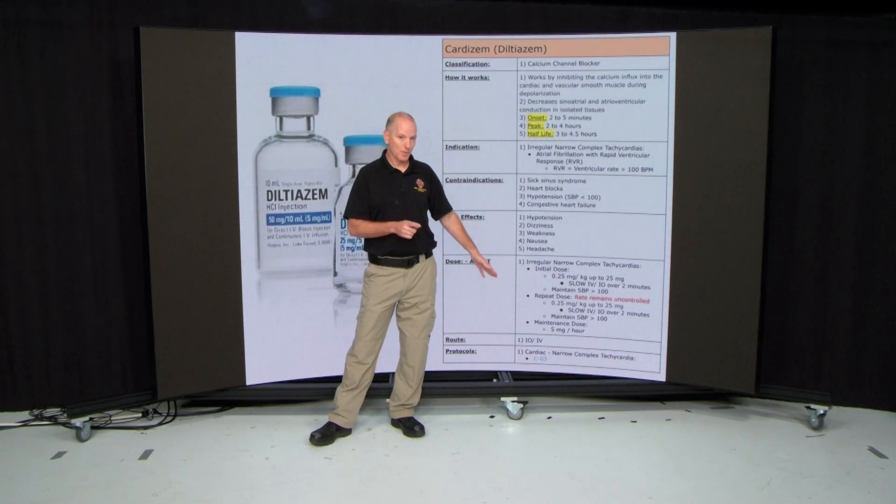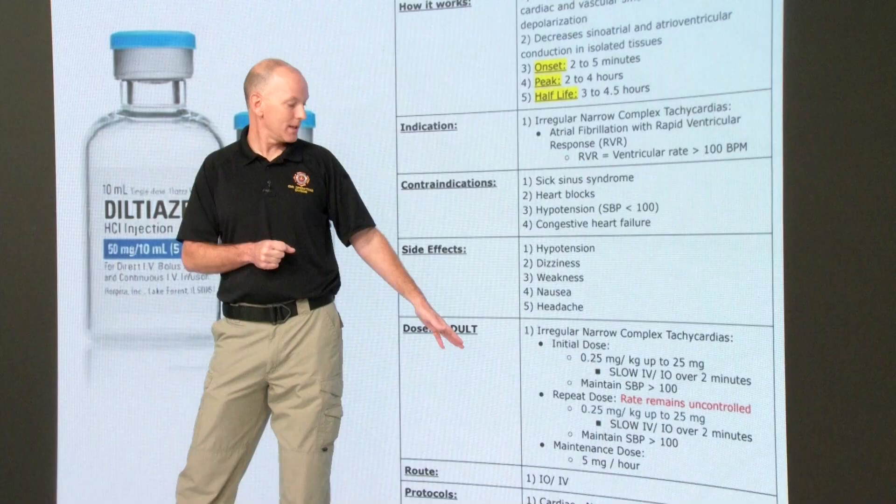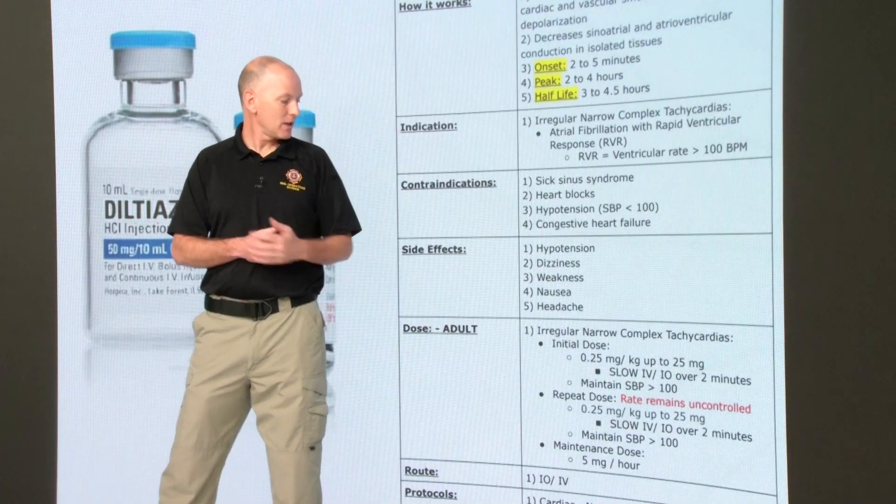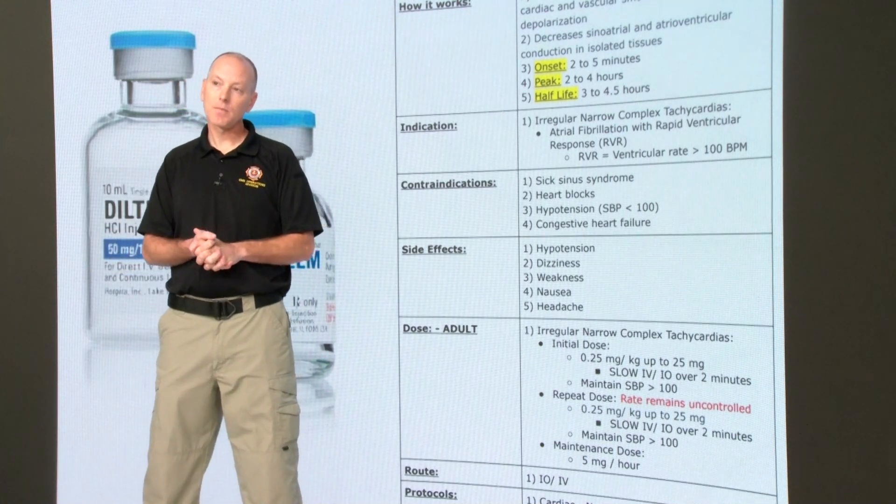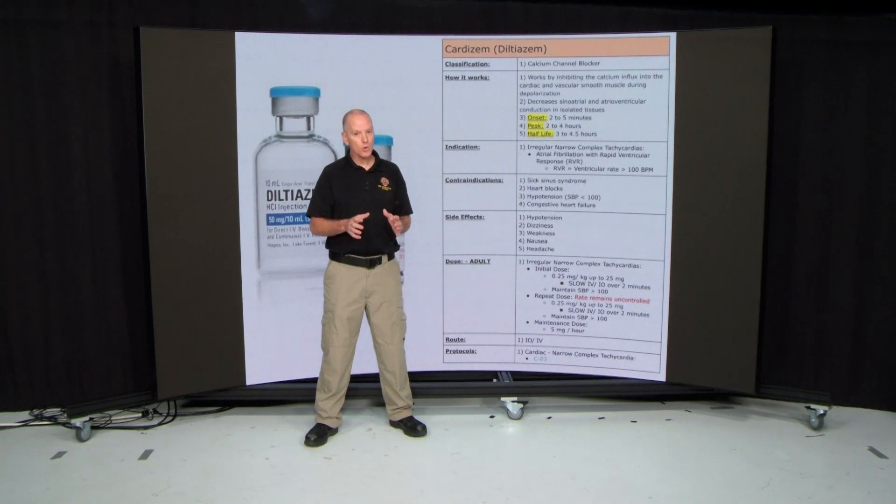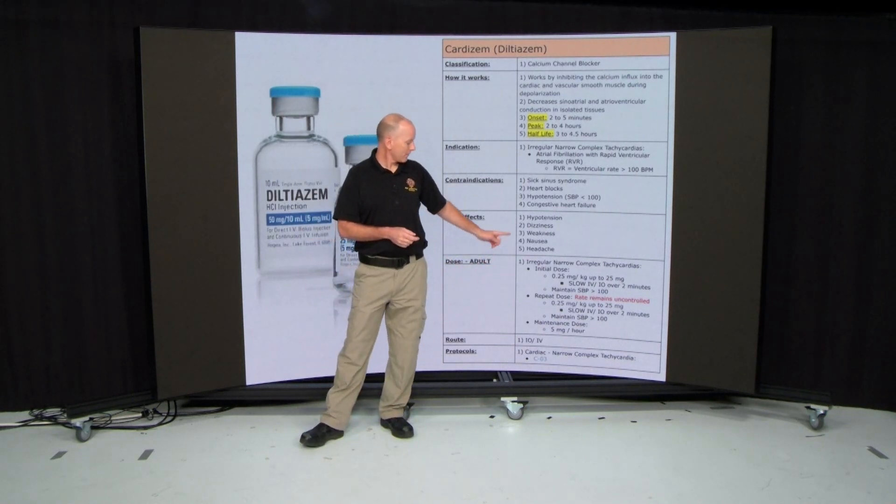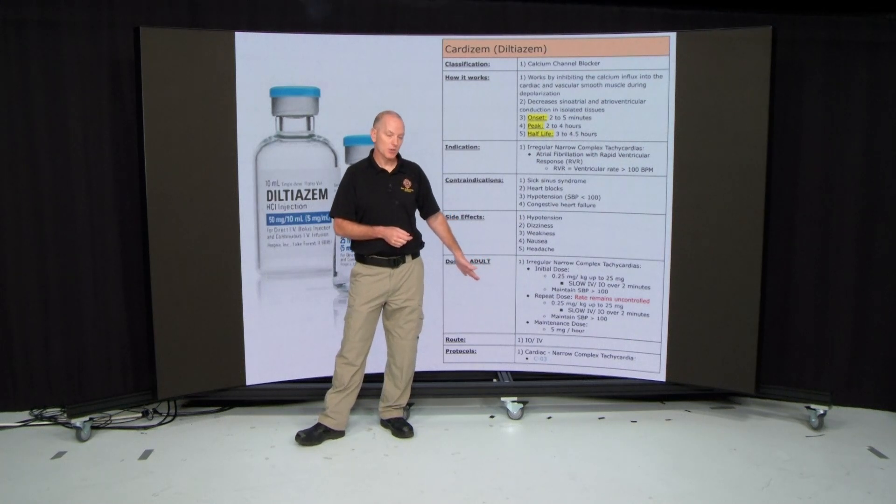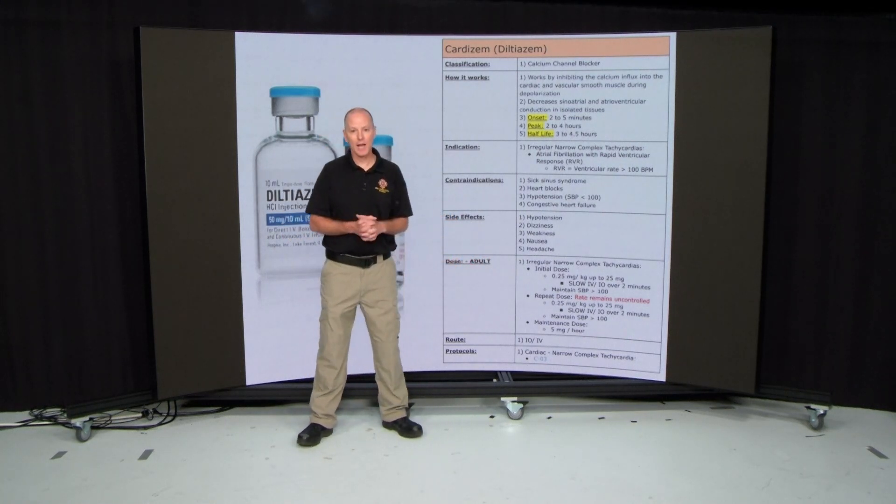If not, and their BP is still greater than 100, then you can get an additional dose of 0.25 milligrams per kilogram up to 25 milligrams slowly over two minutes. Once you have conversion of this patient, you're going to make your maintenance dose. The maintenance dose is going to be five milligrams over an hour.